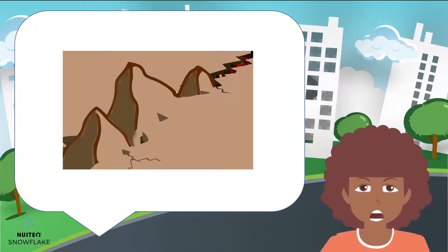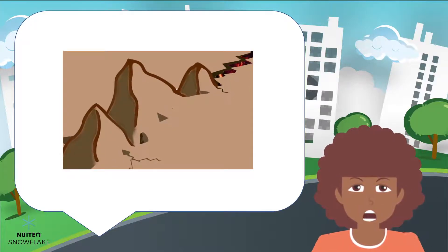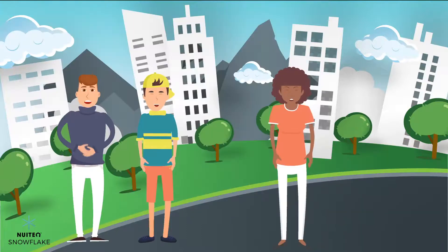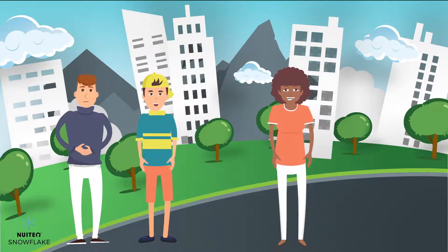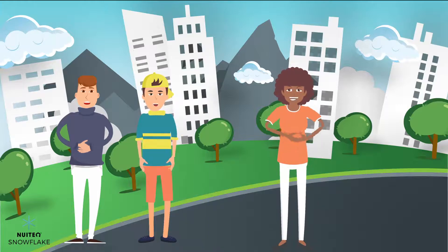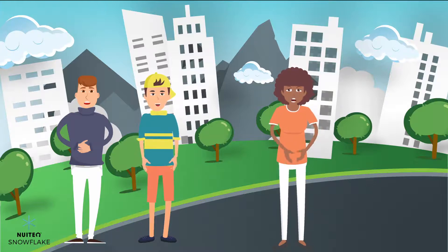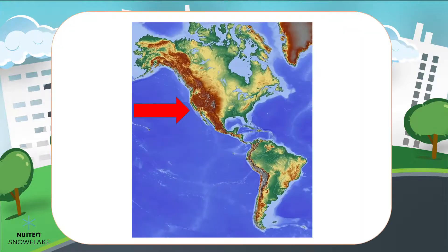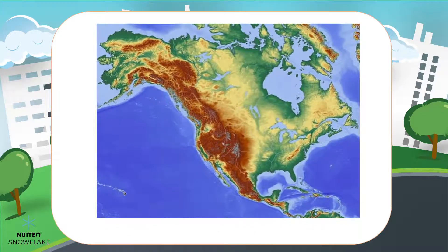By looking at maps we can tell where those plates meet or diverge from each other. My mom uses maps when she's driving. Yes, she uses a street map to find an address, but to see where mountains and volcanoes are on the earth we need a different kind of map, such as a topographic map.